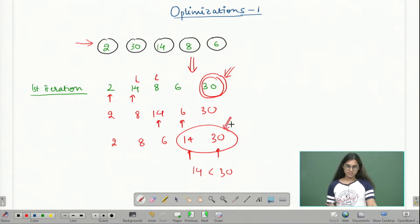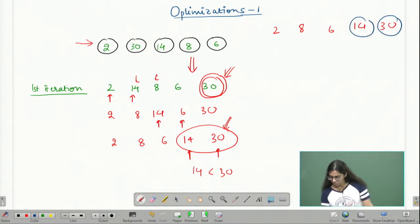Let us look at another iteration to make this more clear. Now I have the array 2, 8, 6, 14, and 30. At this point, I know that 30 and 14, both of these numbers, are at the correct positions.